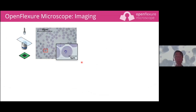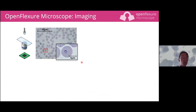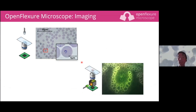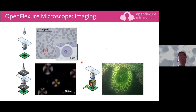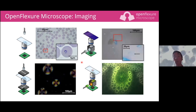It wouldn't be a talk about a microscope without showing some images - though actually the imaging capabilities of the OpenFlexure microscope are in many ways the least interesting part, because it's just a standard microscope with a regular objective. We can do bright-field imaging, stick in a beam splitter and do fluorescence - here's an epifluorescence image - swap in filter cubes for different channels, add polarizers, and even set it up in reflection to image graphene.